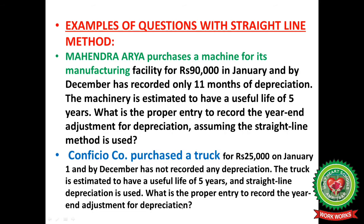Going back to the first question of Mahendra Aria, where they have purchased a machine for Rs 90,000: we will divide 90,000 by 5. When you divide 90,000 by 5, it would be 18,000. So 18,000 is the annual depreciation, and when an entry is recorded it would be for Rs 18,000.